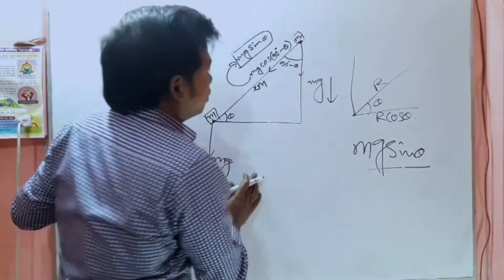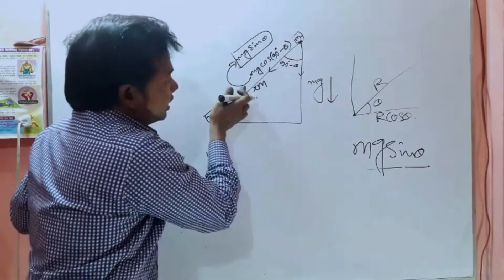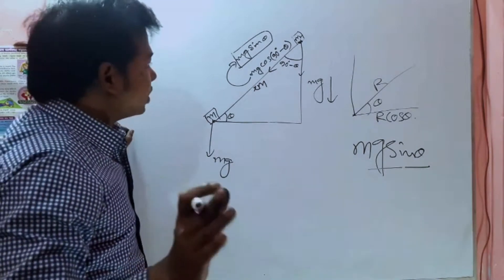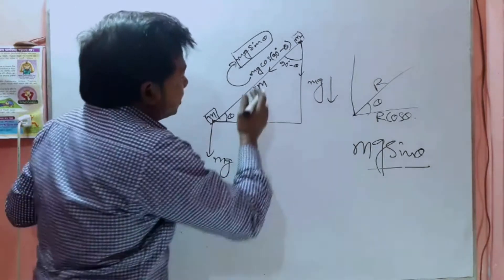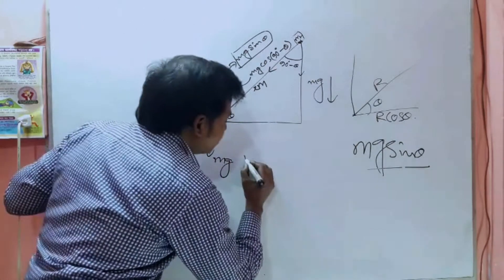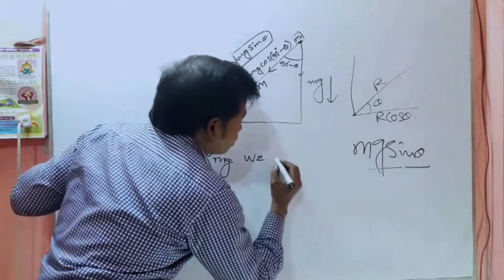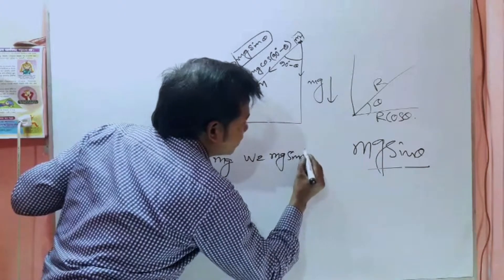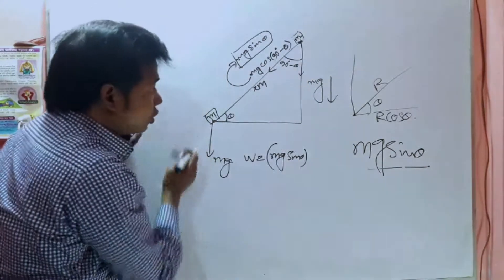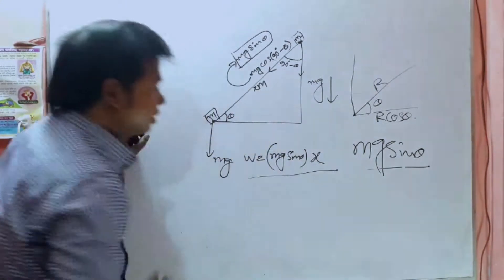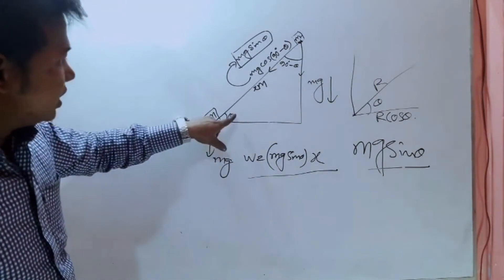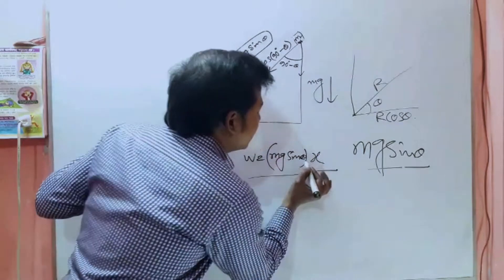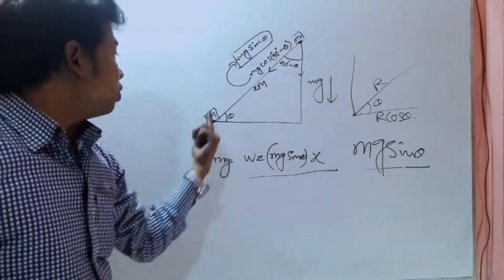You will watch every video of this one. If you want to see this video, you can see that W equals mg sin theta into x². This is the work. This is the law, therefore it is legal, you can find it. If you do the law and you do the law, you can do the law and you can do it.